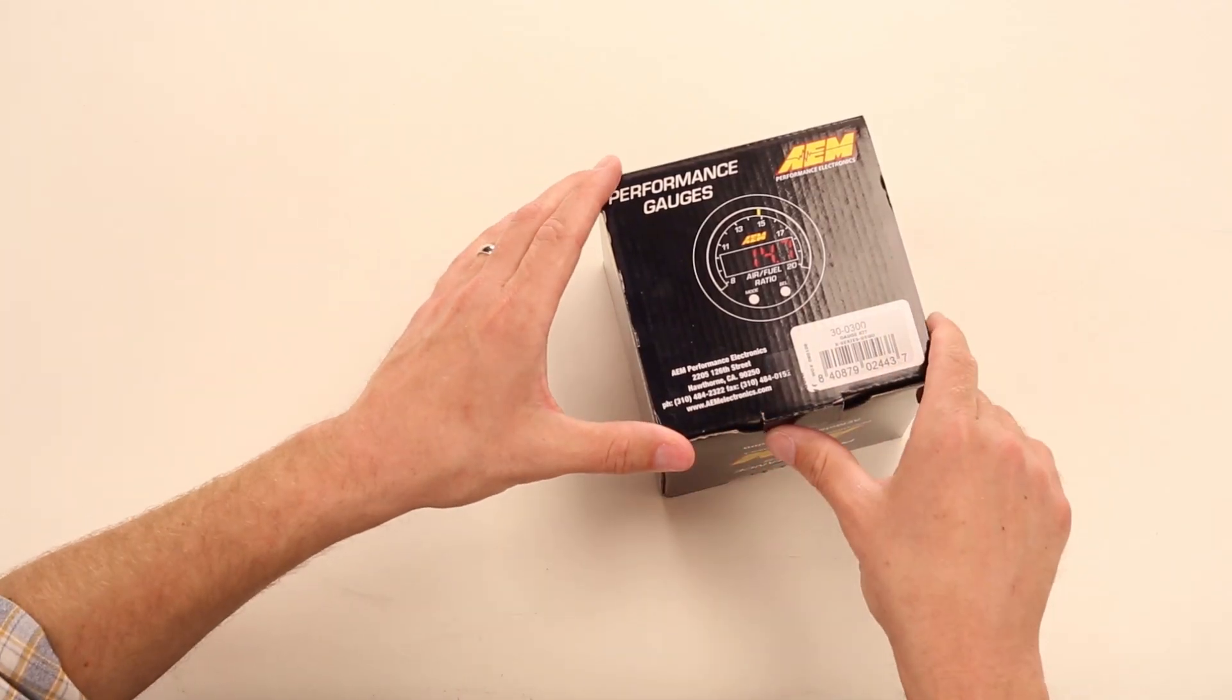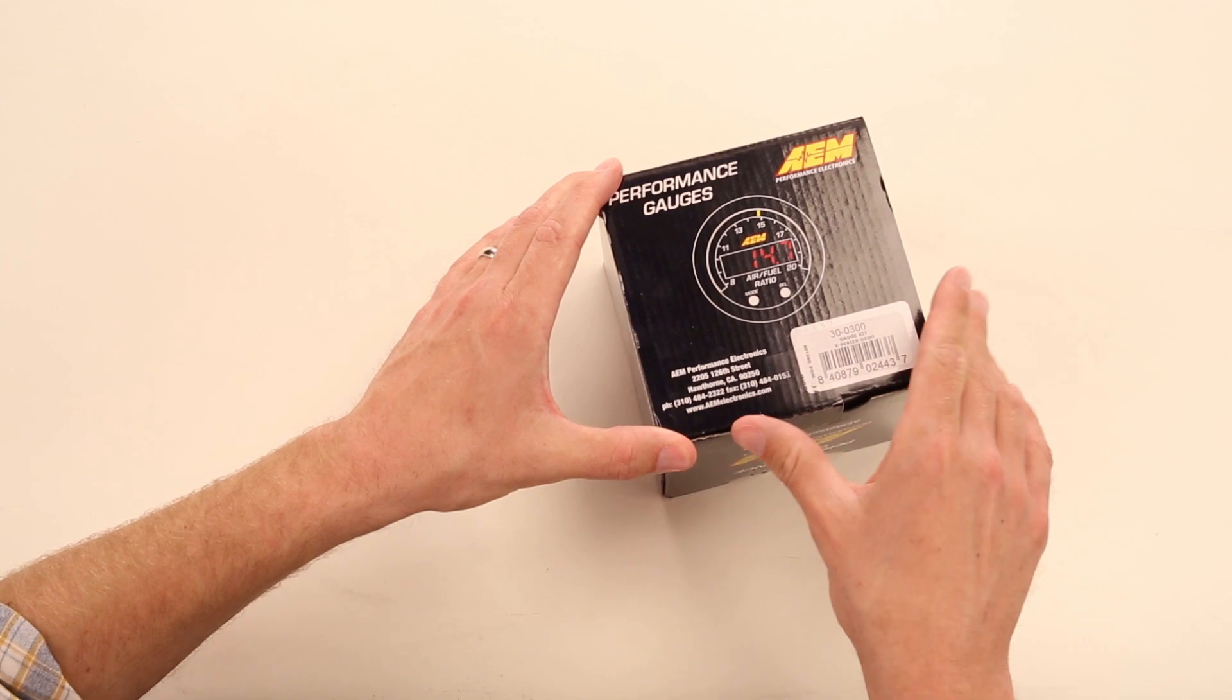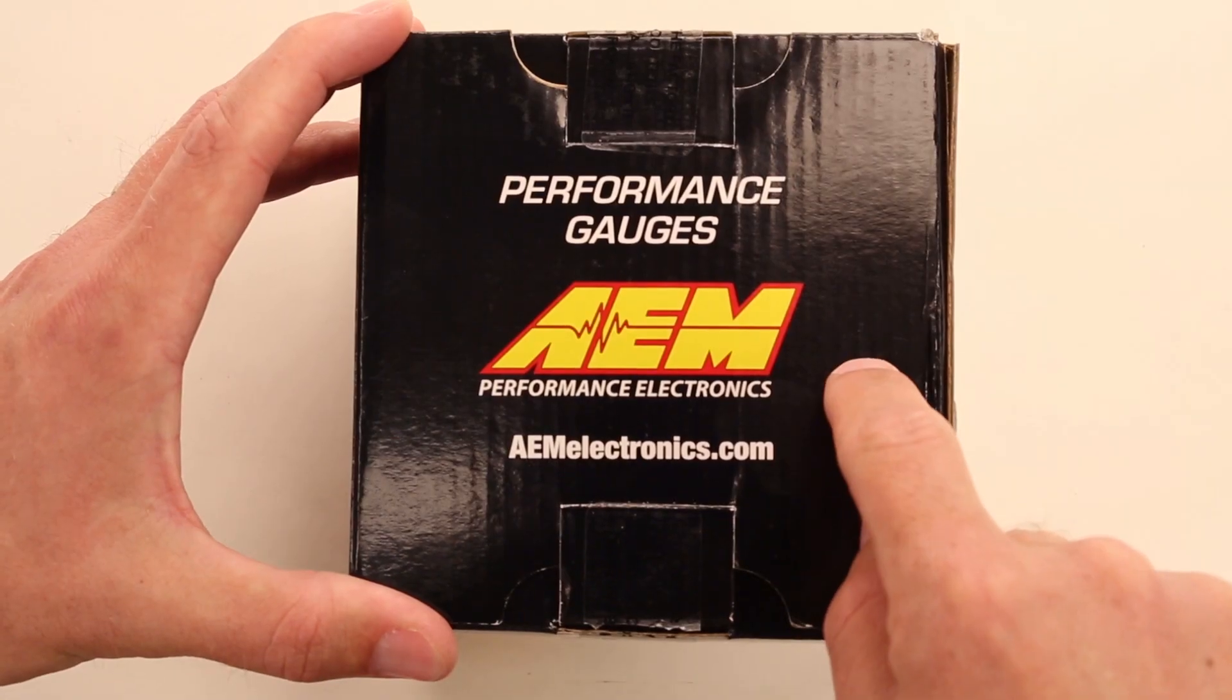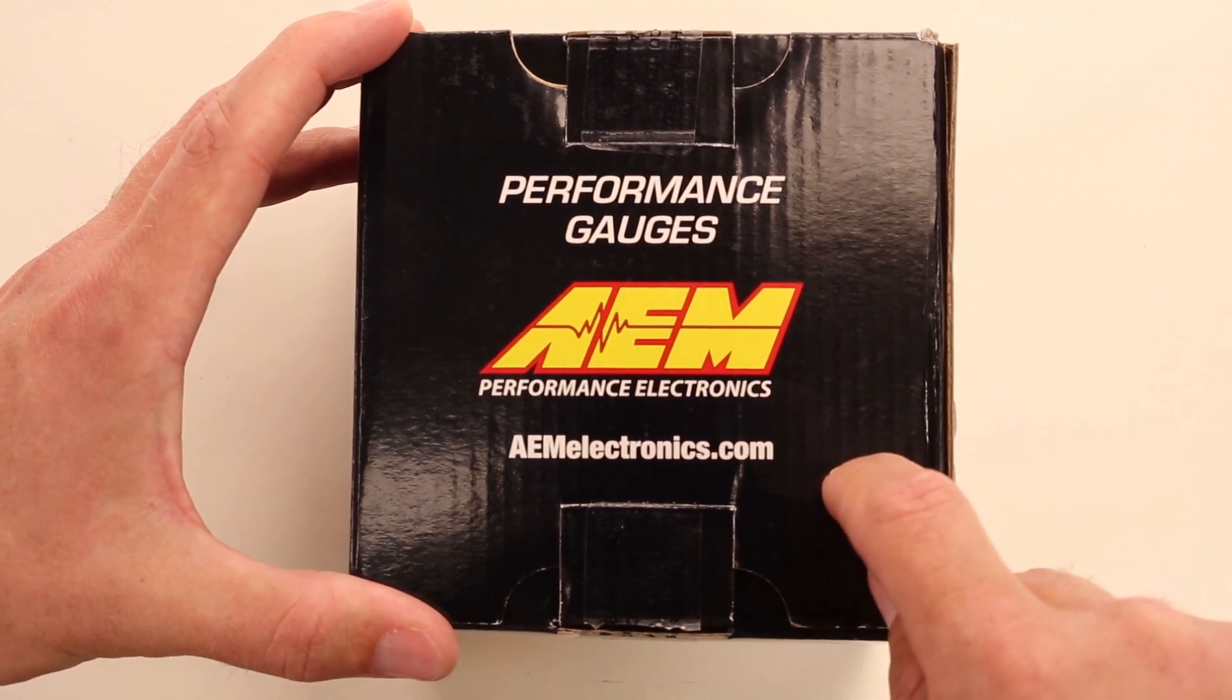Today we have AEM's X-Series Wideband Air Fuel Ratio Gauge made here in Hawthorne, California. This is their second-generation, high-feature, high-tech gauge.